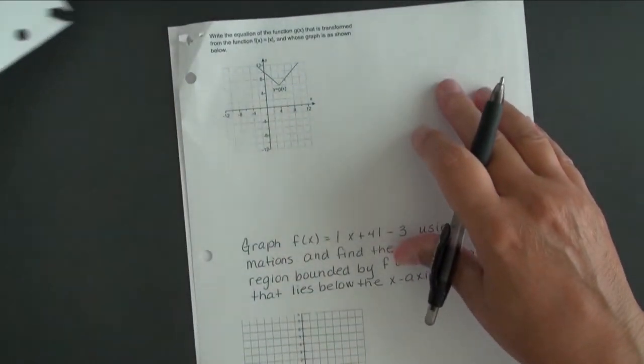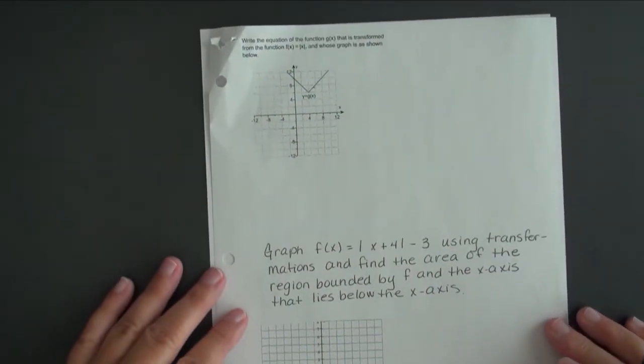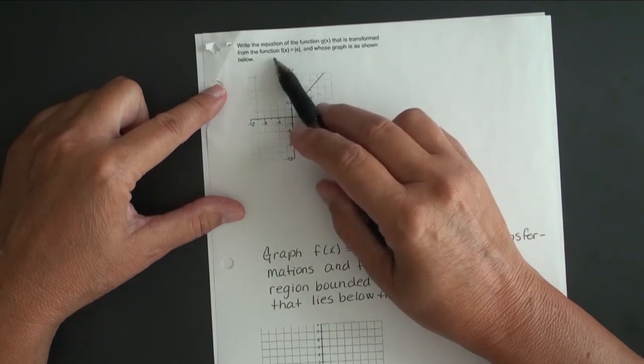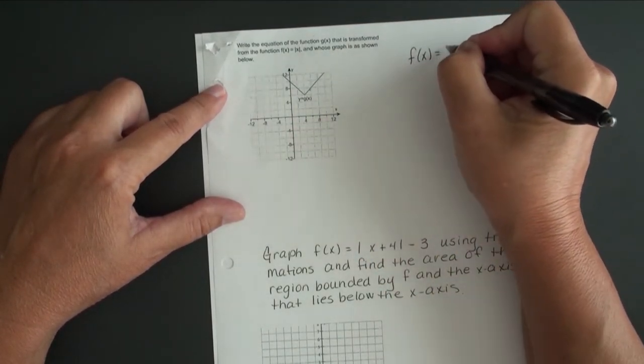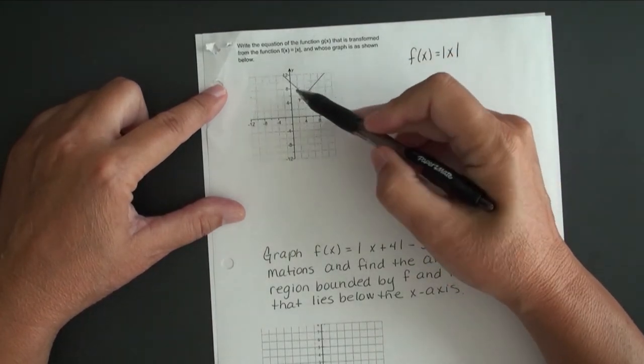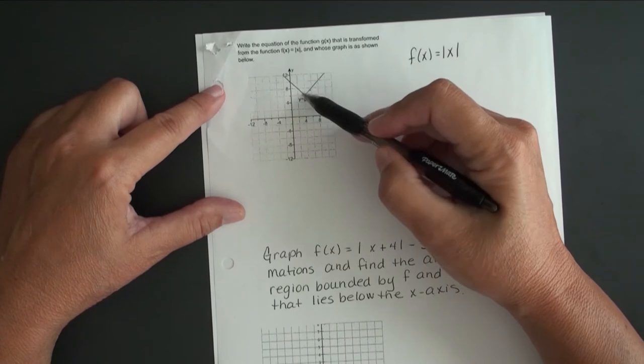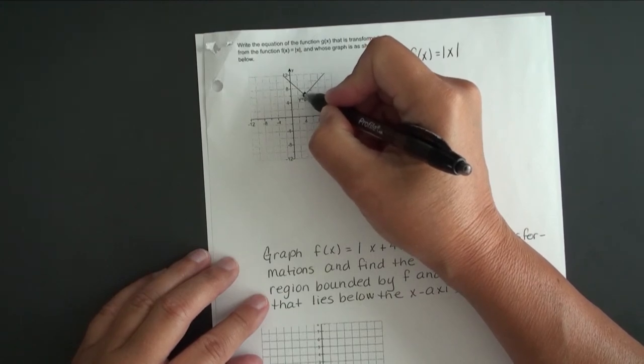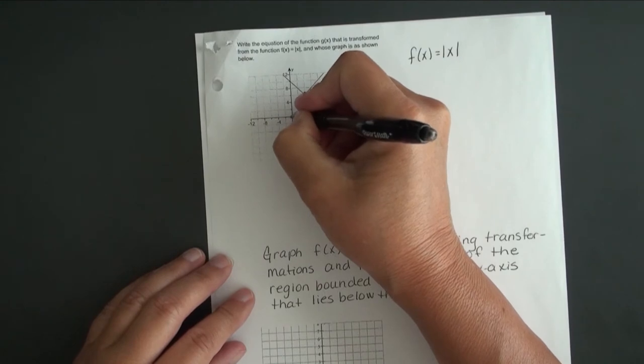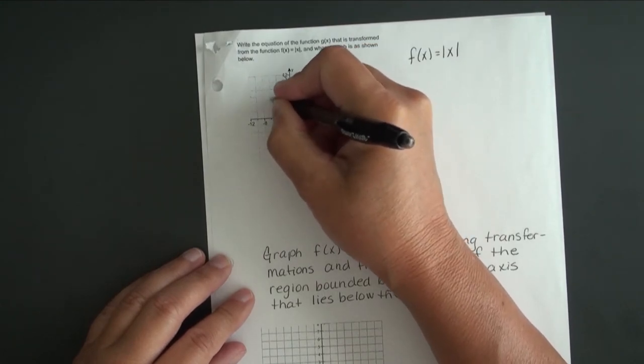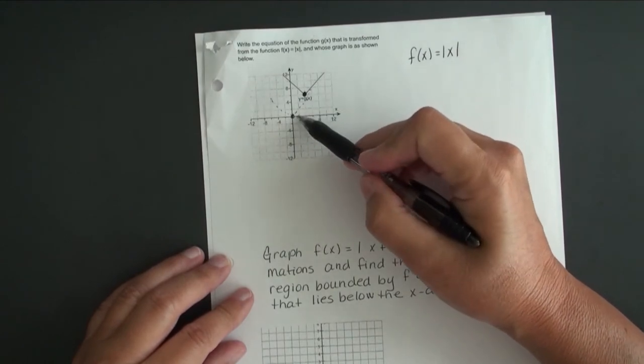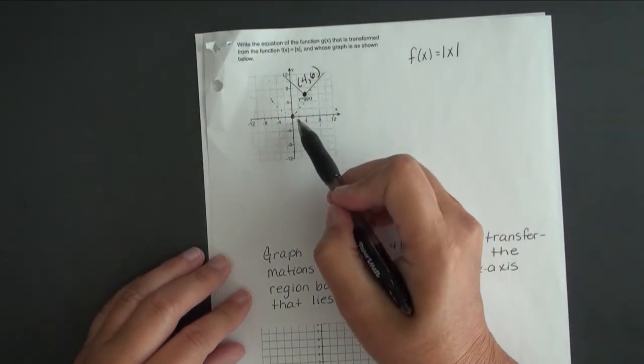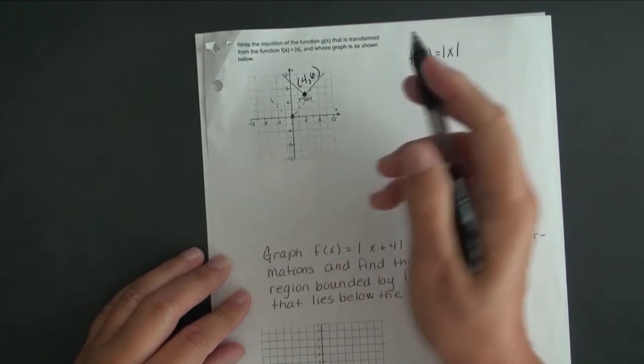Let's continue with our next example. In this example, we have a graph of a function, and we are supposed to write the equation that is transformed from the function f(x) equals absolute value of x. We know that this is an absolute value curve because it is a V shape. Now this point right here is what we need to determine—normally our absolute value function starts at (0, 0), but this one starts at the point (4, 6).